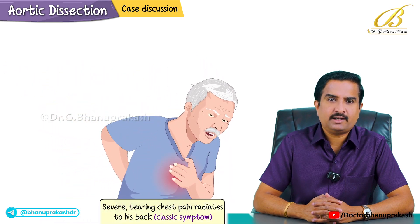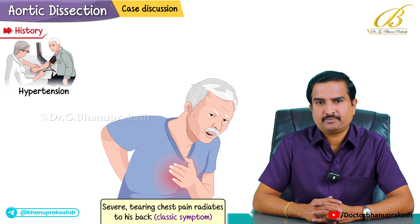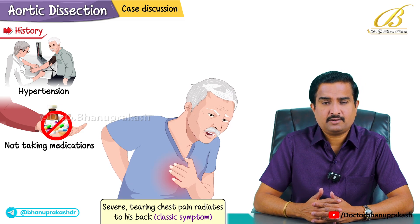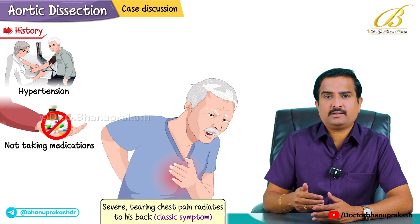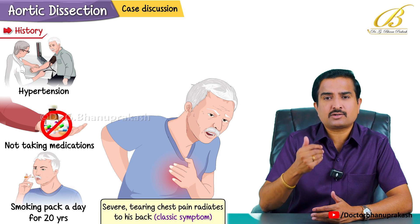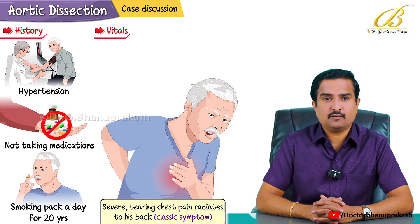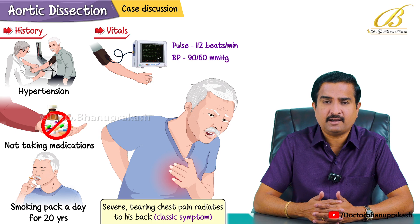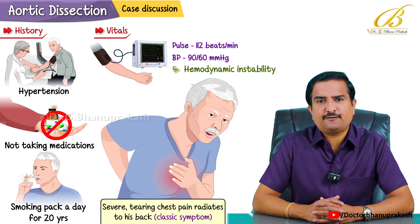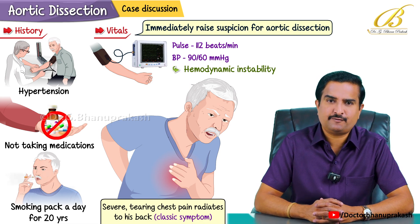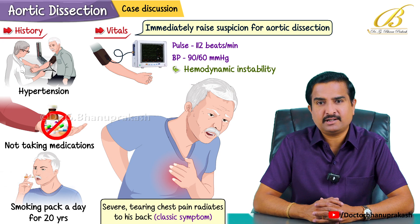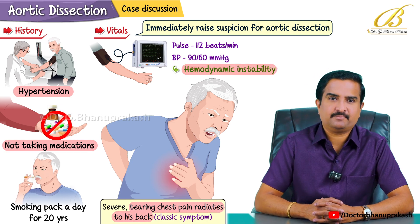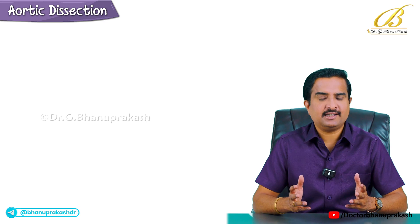He has a history of hypertension, but he hasn't been taking his medications, which is why the hypertension becomes severe and leads to this tearing problem. He has also been smoking a pack a day for 20 years. His vitals reveal a pulse of 112 beats per minute and blood pressure of 90/60 mmHg, indicating hemodynamic instability — findings that should immediately raise suspicion for aortic dissection in a hypertensive patient with radiating chest pain.